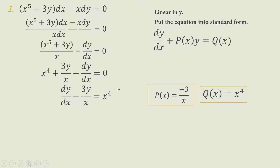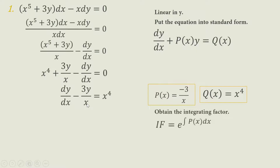This is already our standard form. We can see that P(X) equals negative 3 over X, and Q(X) equals X⁴. On our P(X), we exclude the Y variable because that is part of our standard form. The next step is to obtain the integrating factor: e raised to the integral of P(X) DX, which is the integral of negative 3 over X times DX.